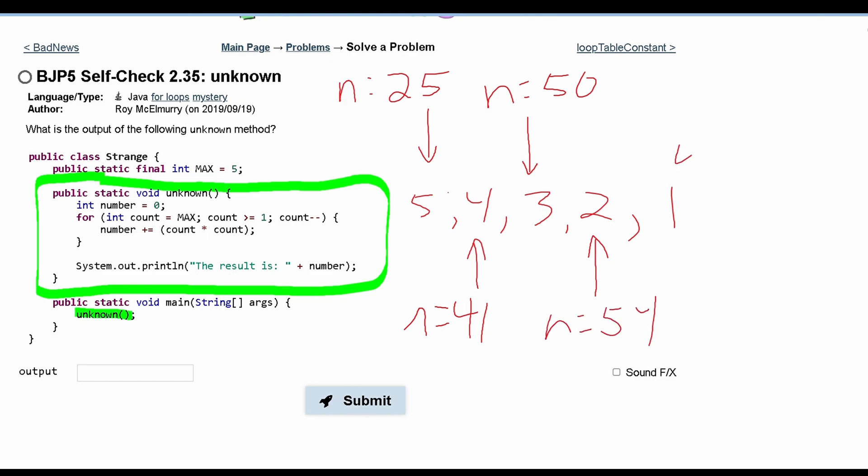And lastly, we have our last iteration, where count is equal to 1. So we're going to have 1 plus 54, so n is equal to 55.